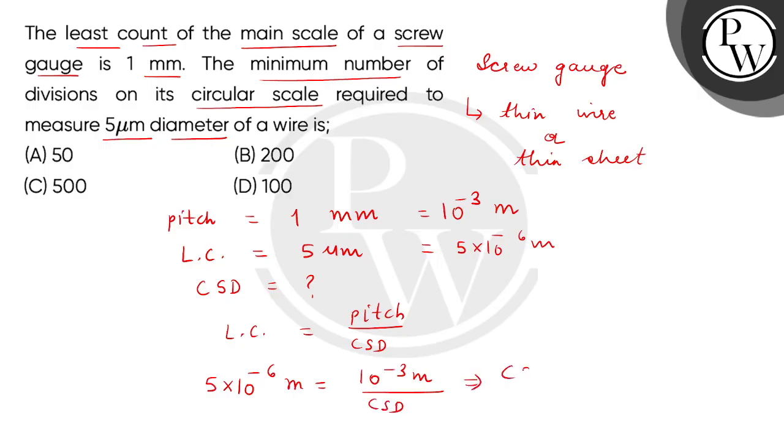So, we get the total number of circular scale divisions: 10 to the power of minus 3 meter divided by 5 multiplied by 10 to the power of minus 6. The meters cancel out. The total number of circular scale divisions gives us the correct answer, which is option B. Thank you.